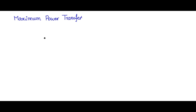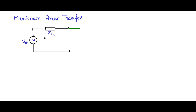Let us now discuss maximum power transfer in a circuit network. Consider a circuit network which is represented by a Thevenin equivalent, connected to an external load ZL, where ZL is variable.